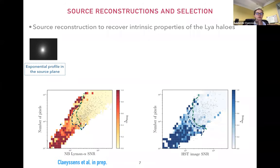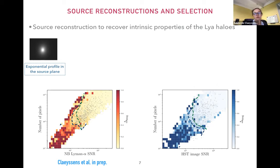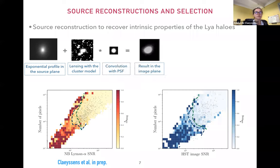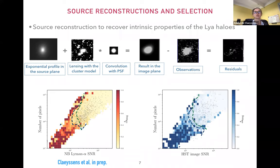In order to recover intrinsic properties of the Lyman-Alpha emitters, we have to model both the UV emission from HST images and the Lyman-Alpha emission from MUSE data cubes in the source plane. To do that, I developed with the code LensTool a forward modeling approach. The idea is simple: you choose a model in the source plane — for example, a Sérsic or exponential distribution — lens it with the best mass model for the cluster, add the PSF, and compare with observations to minimize residuals. You just choose a parametric model at the beginning.